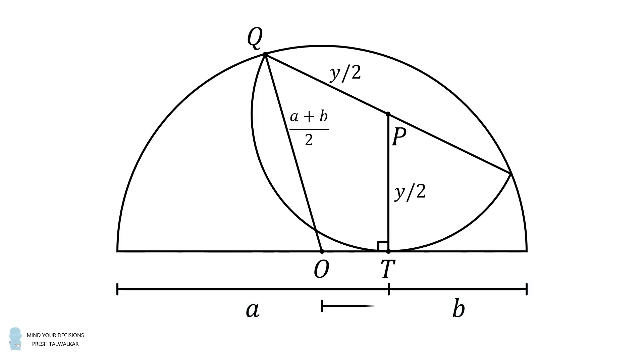Next, construct the distance OT. Its distance will be equal to the radius of the large semicircle minus b. We can substitute for the radius of the large semicircle, and then we can simplify. OT will be equal to a minus b all over 2.